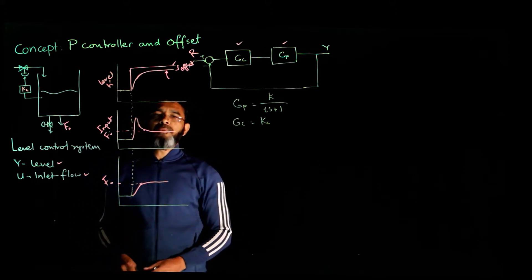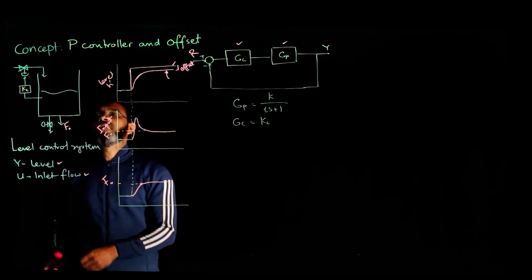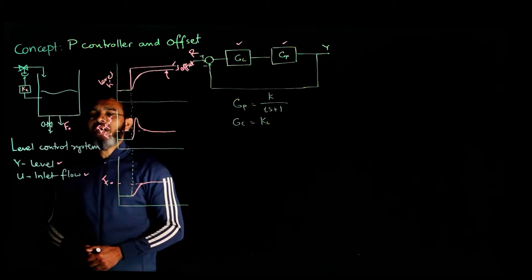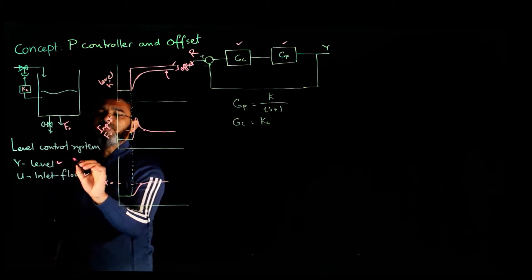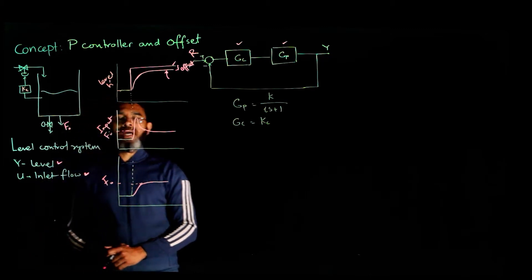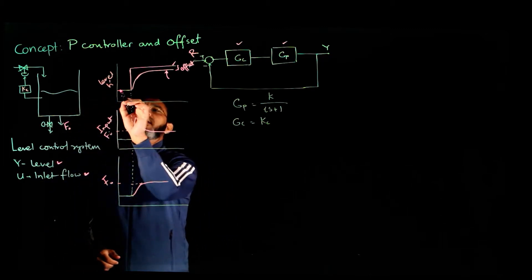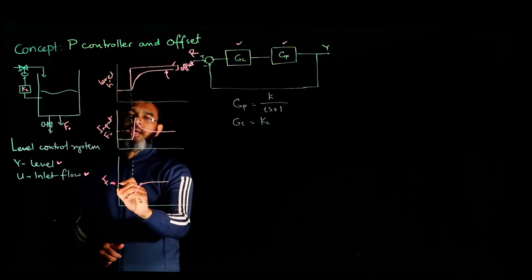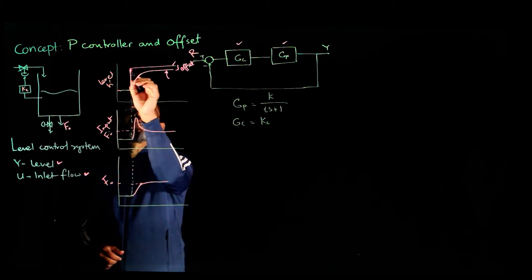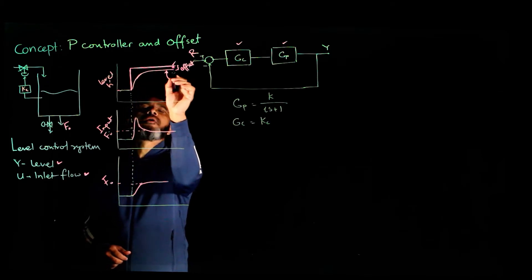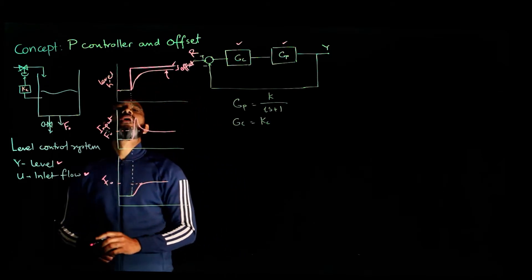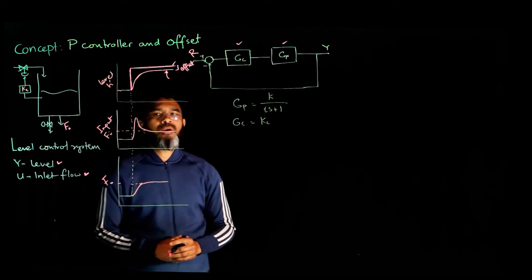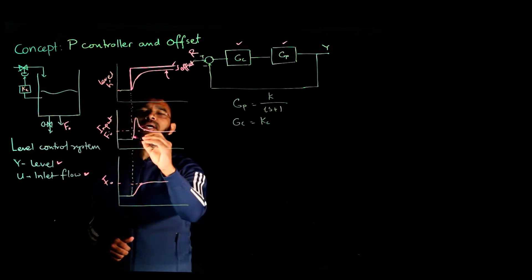We look at the offset issue with the proportional controller. We take the example of a tank process where the objective is to maintain the level of liquid in the tank. The output is the liquid level, maintained by manipulating the inlet flow. Initially the input and output are at the desired value, and when there is a change in the set point, the output will start to change because there will be a large error initially between the set point and the output.